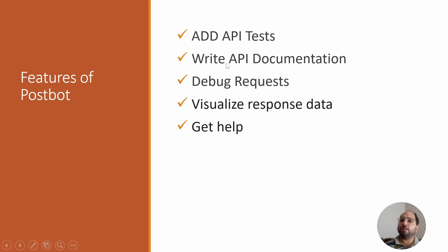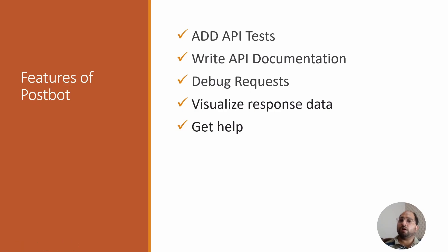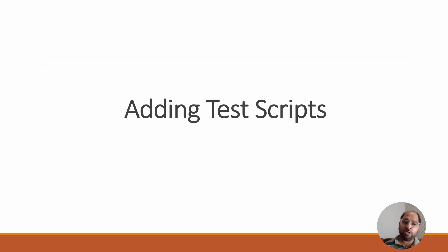Now, what are the features of Postbot? It can add test scripts for the API that we are hitting. It can generate documentation, which is a crucial part. It can debug the request in case we are getting unexpected output. We can visualize the response using the chat in Postbot, and we can get help related to Postman using Postbot.